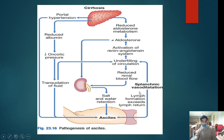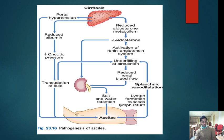The other cause is splanchnic vasodilation, mainly seen due to portal hypertension. Splanchnic vasodilation leads to underfilling of circulation, which activates the renin-angiotensin system. This leads to increased synthesis of aldosterone. Aldosterone causes sodium absorption and potassium secretion, leading to salt and water retention — and this is another cause of ascites.